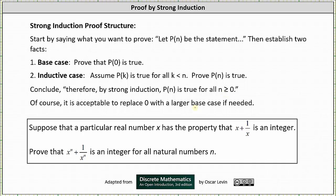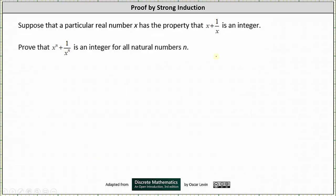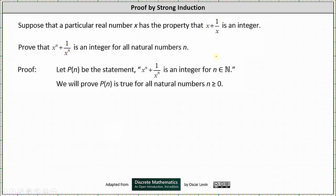As an example, suppose that a particular real number x has the property that x plus one divided by x is an integer. Prove that x to the power of n plus one divided by x to the power of n is an integer for all natural numbers n. So to begin, let p of n be the statement: x to the power of n plus one divided by x to the power of n is an integer for all natural numbers n. We want to prove that p of n is true for all natural numbers n greater than or equal to zero.